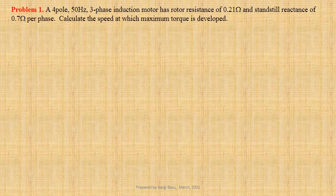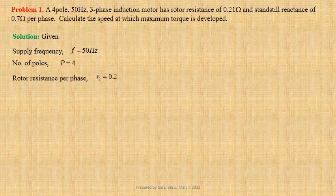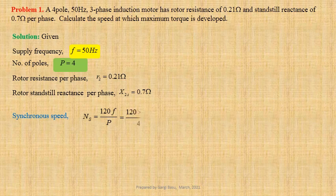Problem number 1. A 4-pole, 50 hertz, 3-phase induction motor has rotor resistance of 0.21 ohm and standstill reactance of 0.7 ohm per phase. We have to determine the speed at which maximum torque is developed. Given data: supply frequency F equals 50 hertz, number of poles P equals 4, rotor resistance per phase R2 equals 0.21 ohm, rotor standstill reactance per phase X2S equals 0.7 ohm. Synchronous speed Ns equals 120F by P equals 120 into 50 divided by 4 equals 1500 RPM.